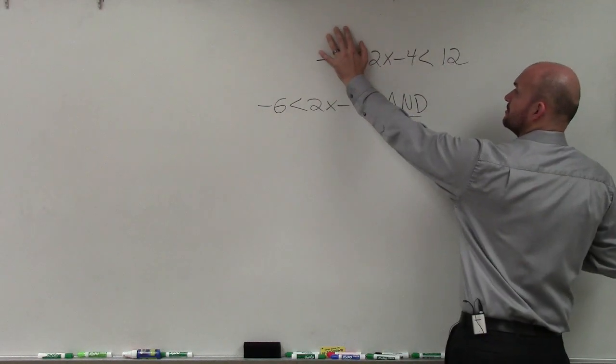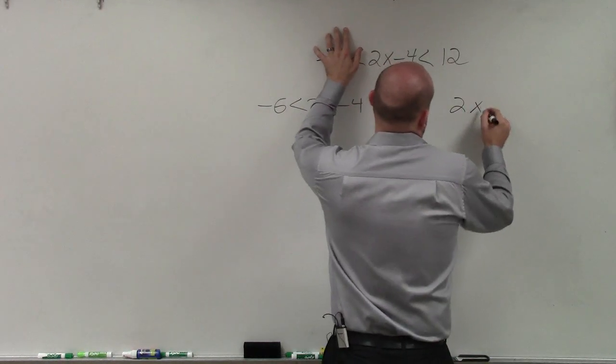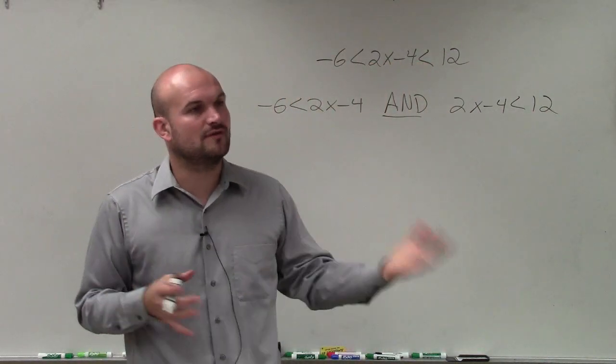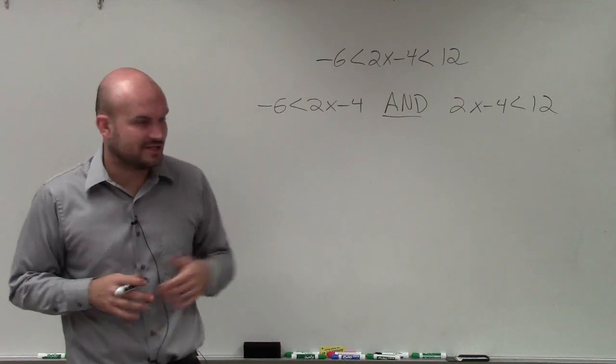So I covered this up. Now I cover this up. And I say 2x minus 4 is less than 12. So the middle part remains the same. It's just you cover up one side of the inequality on each end.